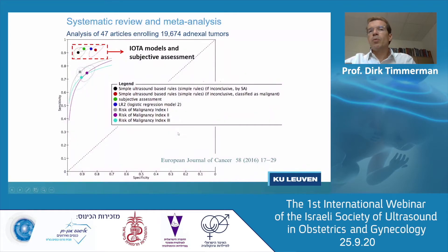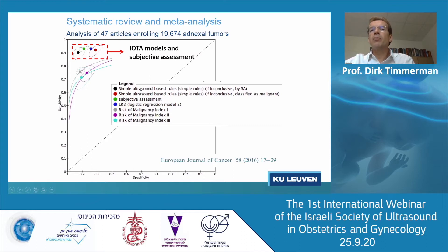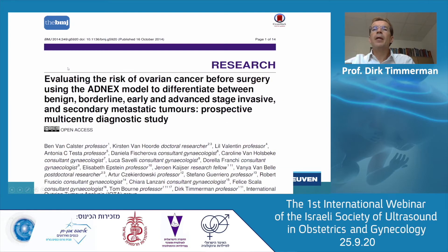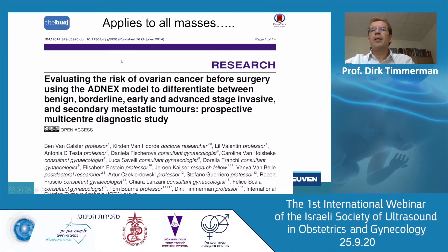The simple rules produced very good results. In a systematic review analysis of 47 articles, the IOTA models — like the simple rules and subjective assessment — are better than any traditional risk of malignancy index. However, there are some inconclusive cases, and this is solved by creating the ADNEX model.